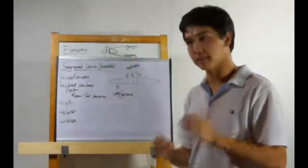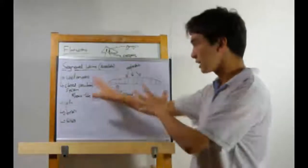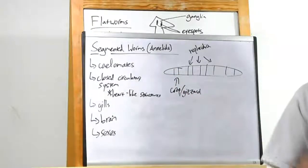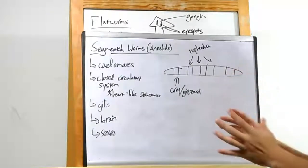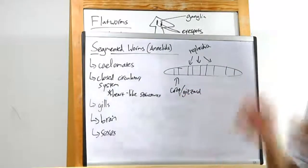These are real coelomates. They have coeloms. They have digestive tracts. They have a closed circulatory system. That's pretty cool, because it used to be everything was done by diffusion. Now they actually have a circulatory system.